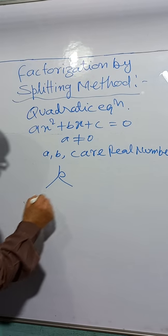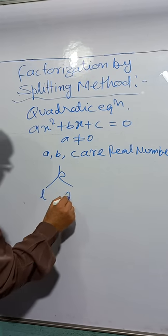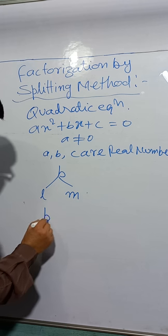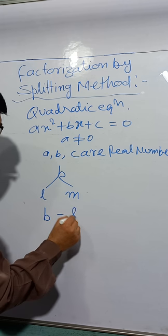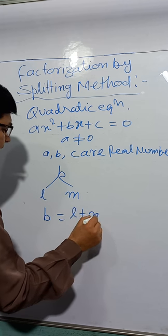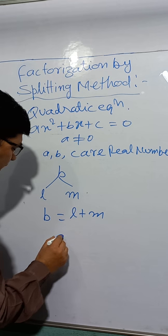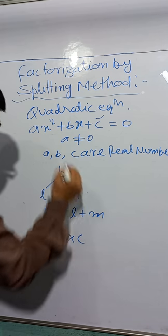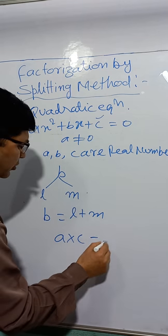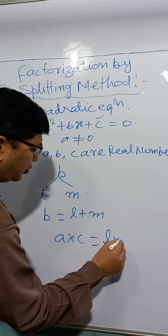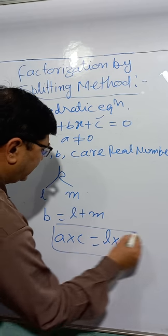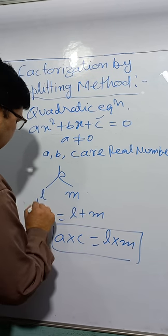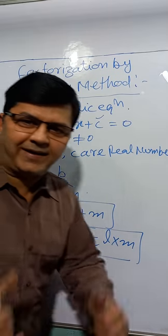To split the middle term, find l and m such that l plus m equals b, and l times m equals a times c. Both conditions must be satisfied.